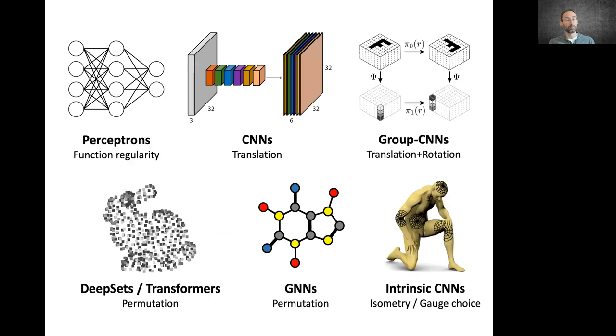The implementation of these principles leads to some of the most popular architectures that exist today in deep learning, whether it's convolutional networks that can be derived from translational symmetry, graph neural networks, deep sets, and transformers that implement permutation invariance, and intrinsic CNNs used in computer graphics and vision that can be derived from what is called gauge symmetry.